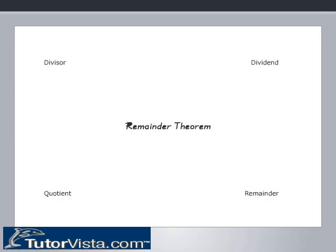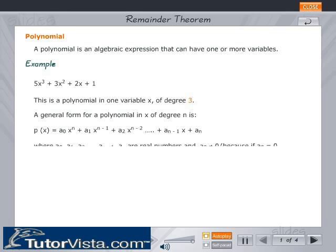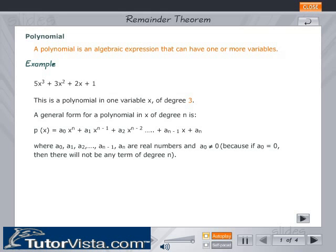Remainder Theorem. A polynomial is an algebraic expression that can have one or more variables. Example: 5x cubed plus 3x squared plus 2x plus 1. This is a polynomial in one variable x of degree 3.